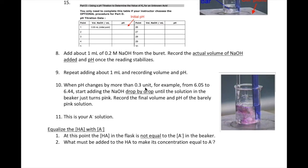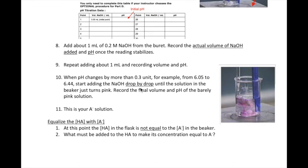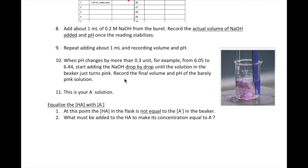When you see a pH change of more than 0.3 units, you are near the equivalence point. To be as close to the equivalence point as possible, you will need to add your NaOH drop by drop until the solution turns pink with one drop of NaOH added. Record the final volume and the final pH. This pink solution is the solution of your conjugate base, or A-.